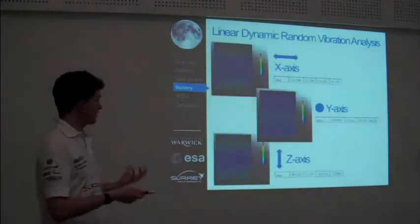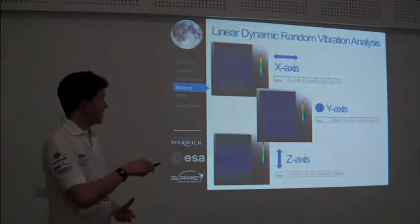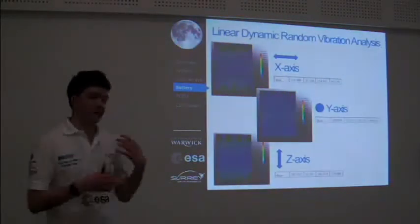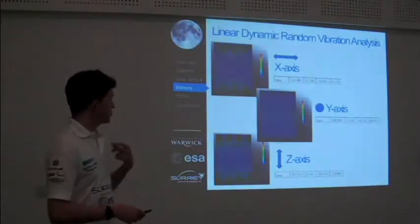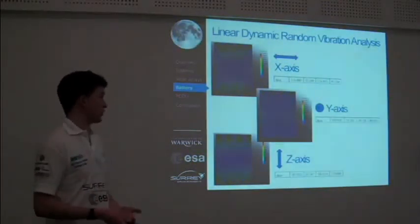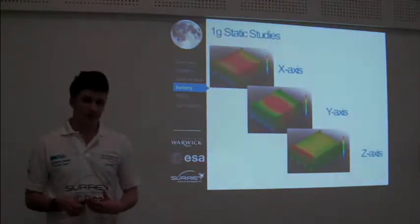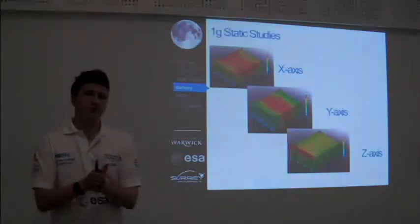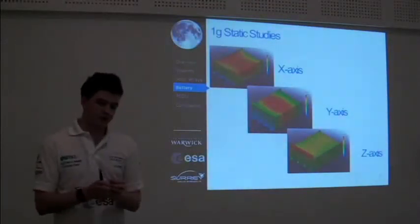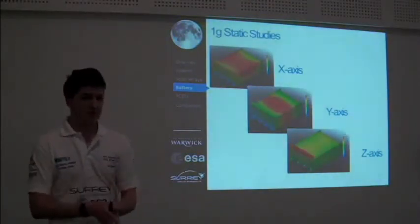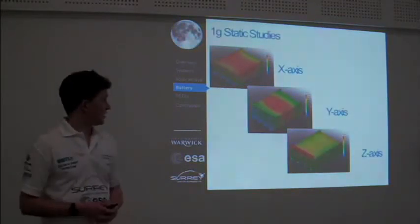Here are some form-based stress plots of the random vibration in those axes. The 3-sigma RMS values obtained using calculations are used to scale the next simulation, which is the 1G static study. In the 1G static study, we're concerned about the displacement of the battery casing, and the objective is to observe a battery casing displacement of less than a millimetre. Here are the X, Y, and Z axes results.